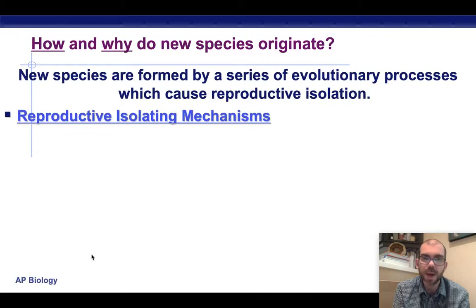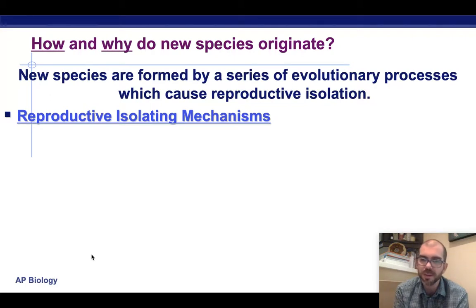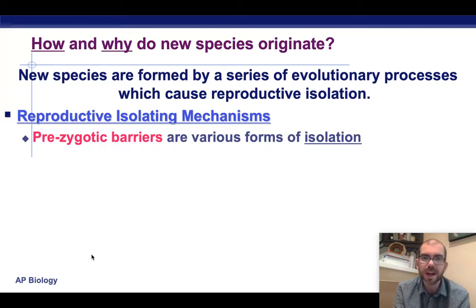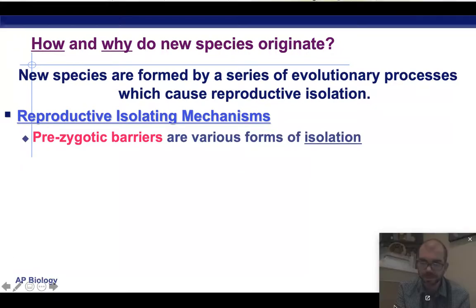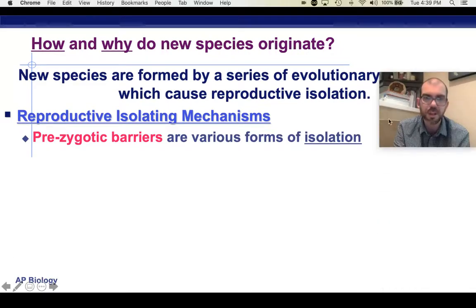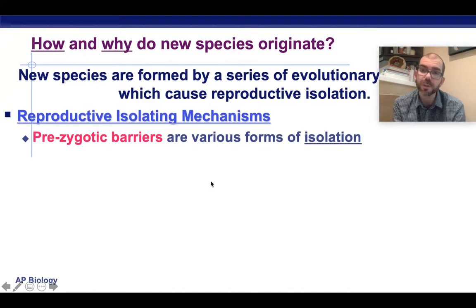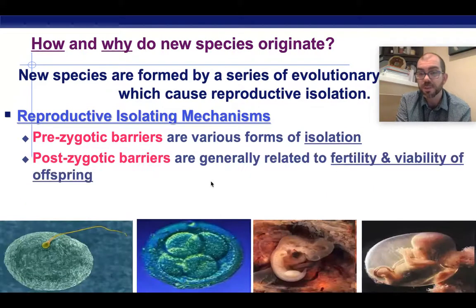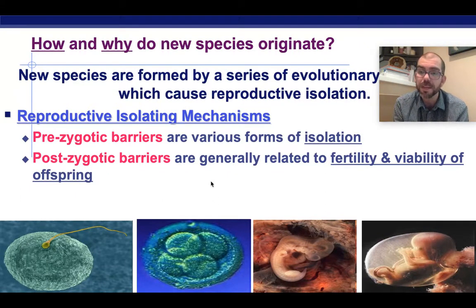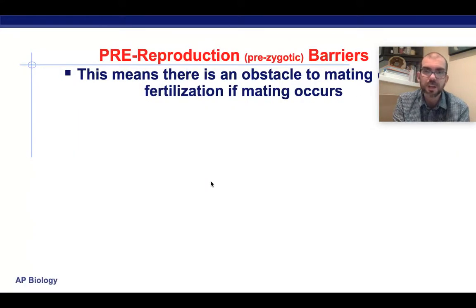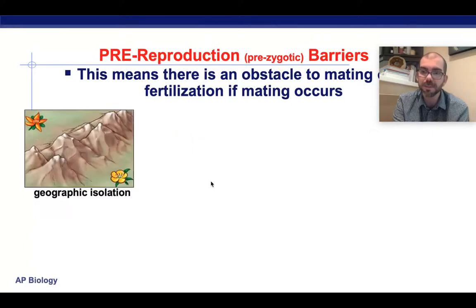We need to look at how and why new species form. The key to that is looking at the reproductive process itself — why some organisms reproduce together and some don't. This is all about reproductive isolating mechanisms. Some isolating mechanisms occur before fertilization, before sperm meets egg. We call those prezygotic barriers. Other barriers occur after the zygote forms — sperm does meet egg, but something prevents a new species from forming.